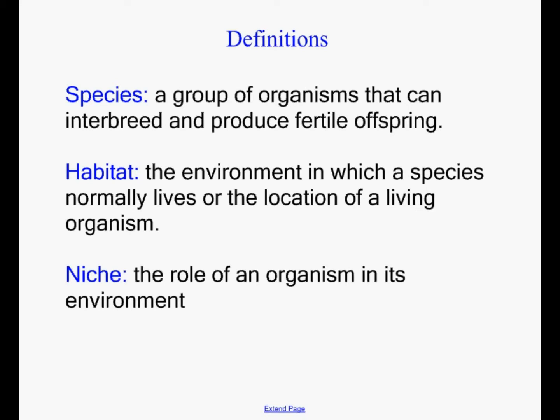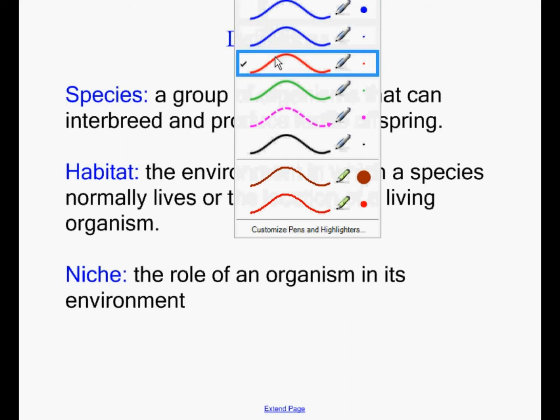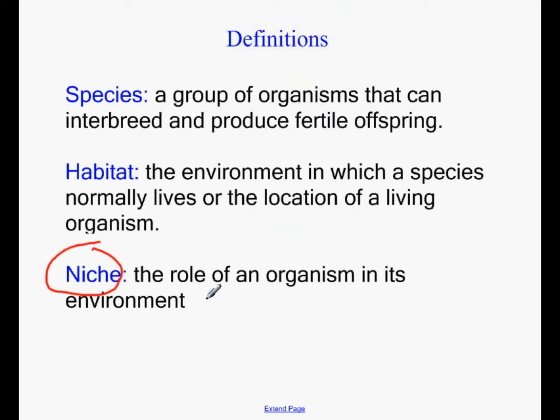Habitat is the local area that they're living in — an environment in which a species normally lives. You can take a lion and drop them in downtown Portland, but Portland is not their natural habitat; it's where they are suited to be living. And finally, niche — that's a really important word. A niche means the role that an organism performs in its environment. Don't think of it as a job; it's not like a lion goes to work each day. But it does have a role — its role, for example, is to kill the zebra, to keep the population of zebras down. That's a really important niche.